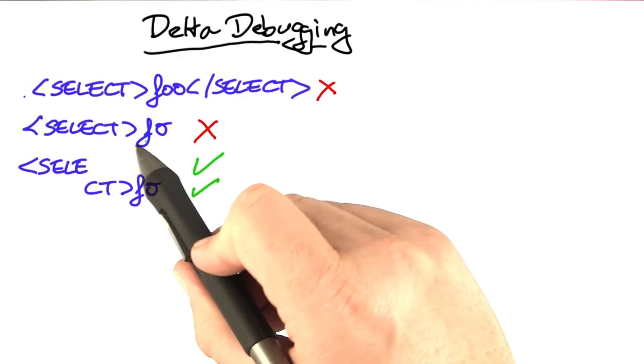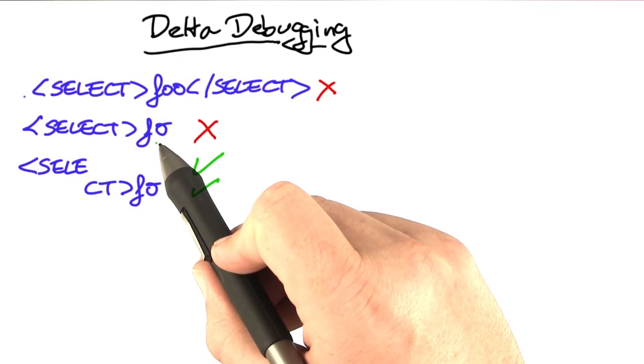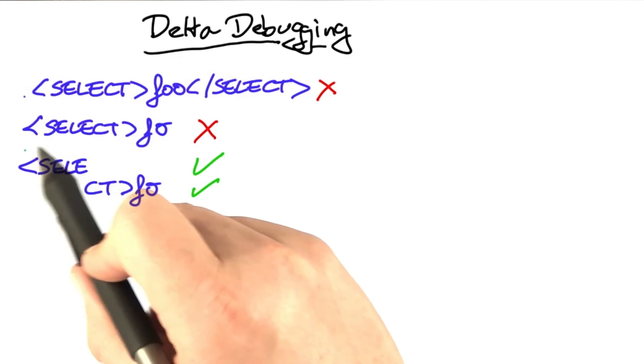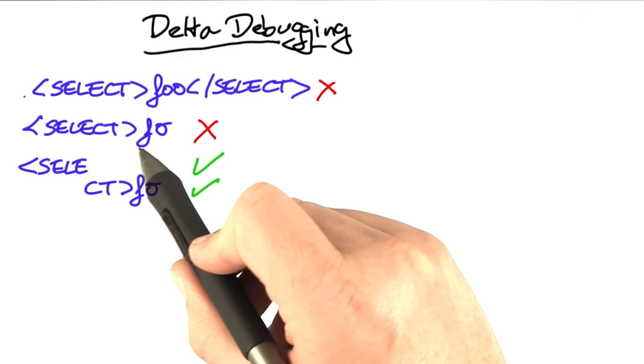As humans, of course, we have a good idea on what to do next. We could, for instance, go and cut away smaller parts. For instance, in here, we already would see the structure: select, info.